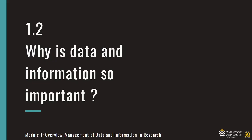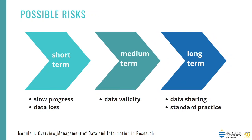First, we need to understand why research data and information is so important. In the short term, poor data management will slow the progress of your research project and exposes you to risks such as data loss. In the medium term, if the validity of your work is questioned, you need to be able to trace the route between data and conclusion. And in the long term, you may want to share your data with others so they can potentially use and build on it later. Increasingly, funders and journals are requiring you to make your data available, and this is developing as a standard practice.